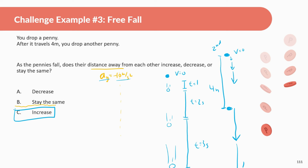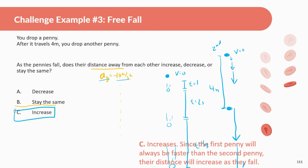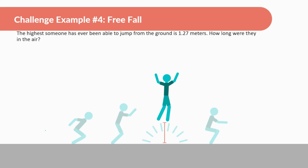The answer is: increases, since the first penny will always be faster than the second penny, their distance will increase as they fall.